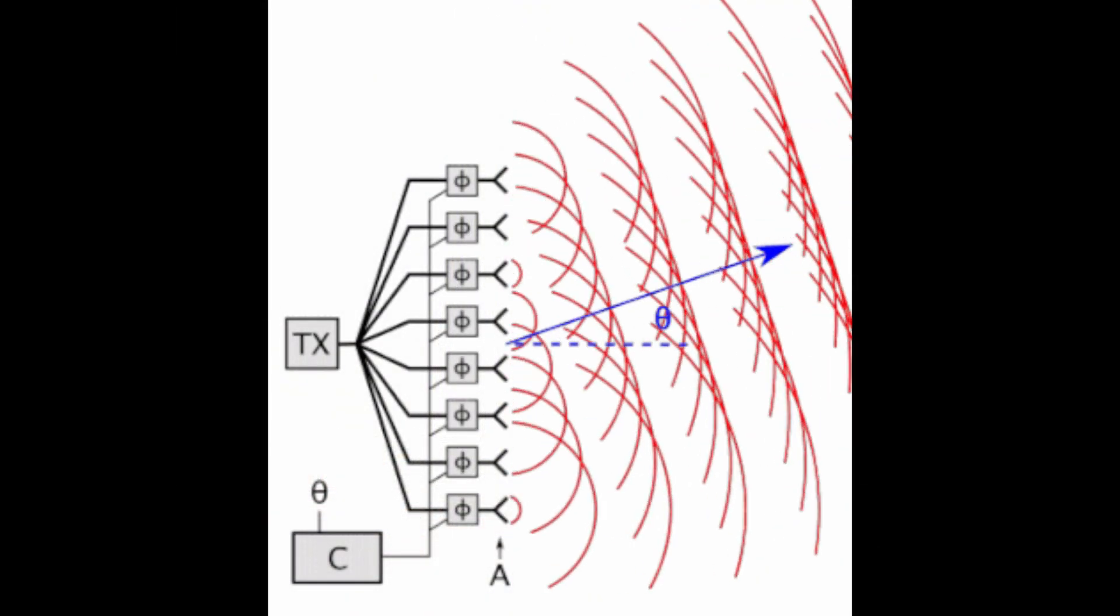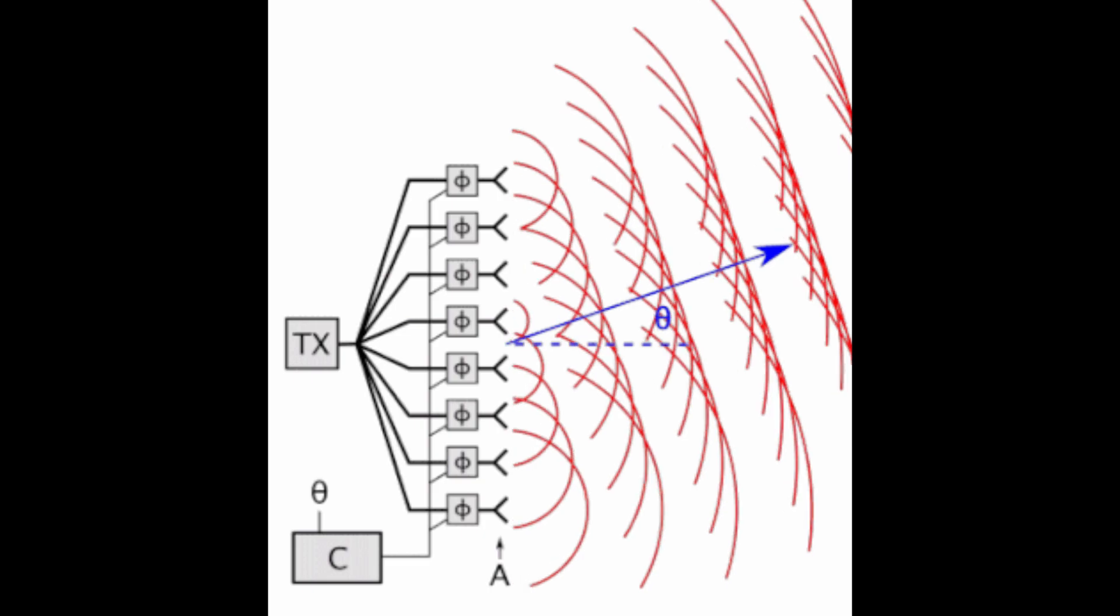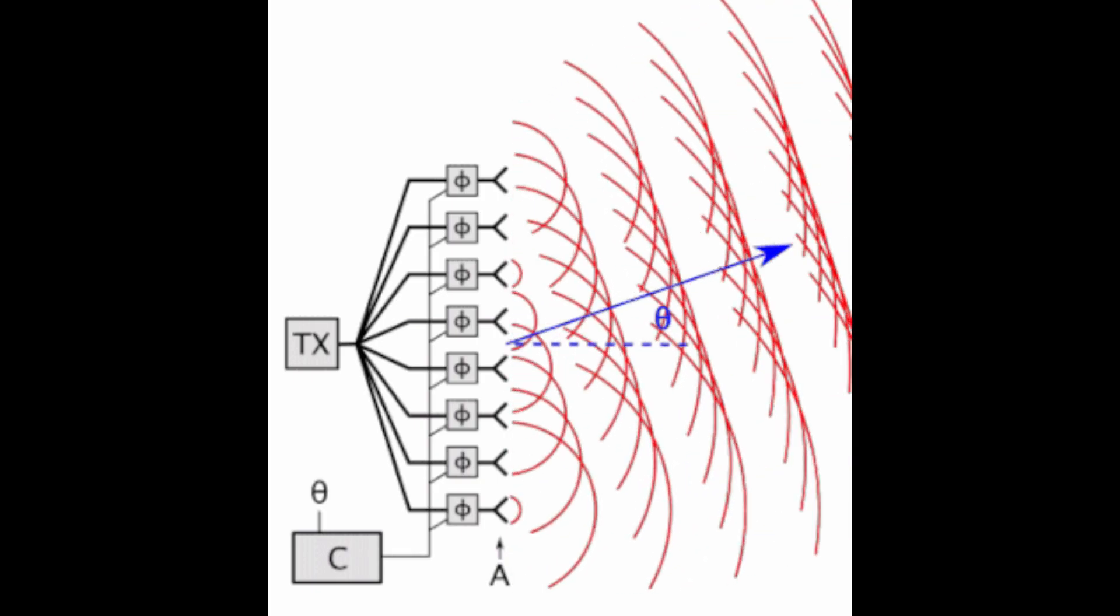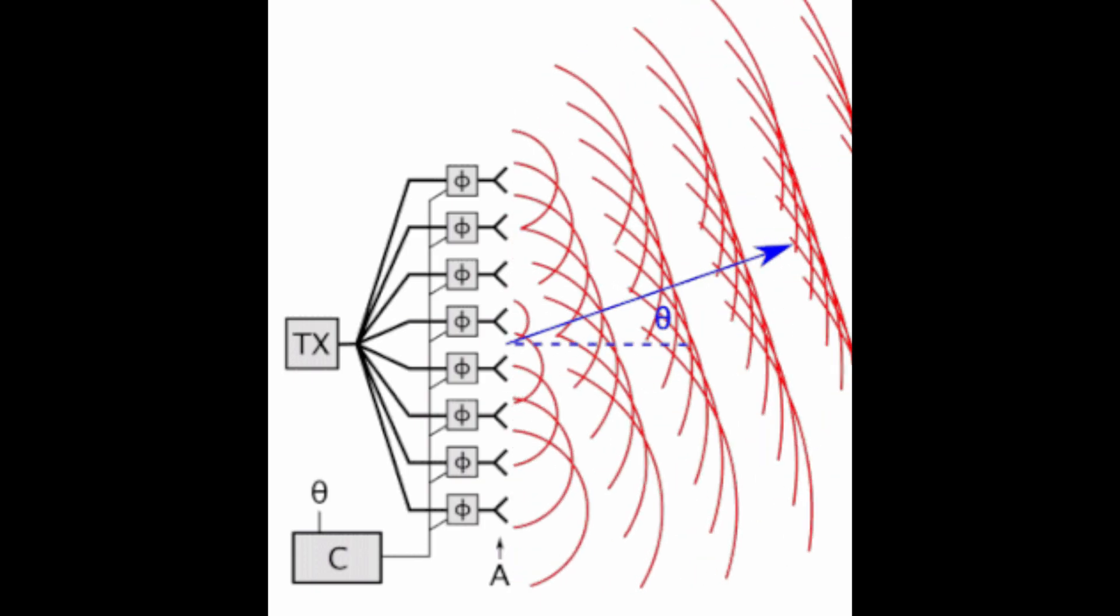So here's a really cool gif that I found online. And this shows you how if you have a whole bunch of emitters and you turn them on in different times, you can have the plane wave come out at an angle instead of coming out straight, which would normally happen if they all turned on at the same time. If you dither their phase, then you can have them come out in an angle.